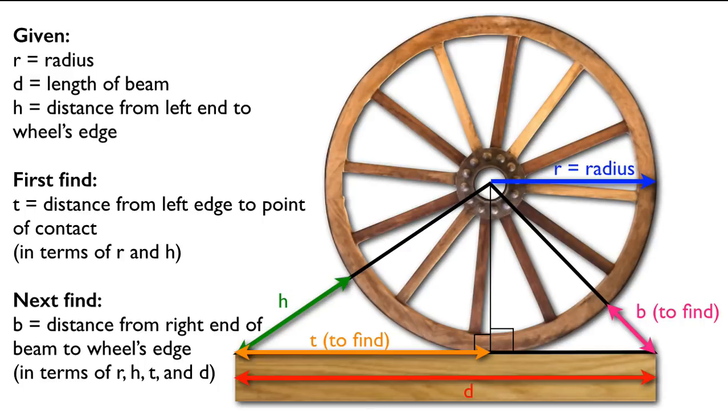Now again, T was in terms of H and R, so technically you could find B just in terms of three letters: R, H, and D. But the math is much, much easier if you find the intermediate calculation, T, first, and then write your final answer in terms of T as well.